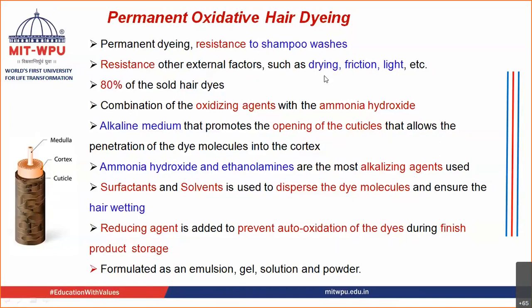They get bound because they enter inside the cortex. 80% of the hair dyes that are sold are permanent oxidative hair dyeing system. They are basically used in order to dye your gray hair — it is a cosmetic because gray hair is a sign of old age. If you see the cosmetics sold nowadays, the highest quantity of cosmetics being sold are anti-aging preparations, which are very widely sold and at very high cost, because nobody wants to look old.